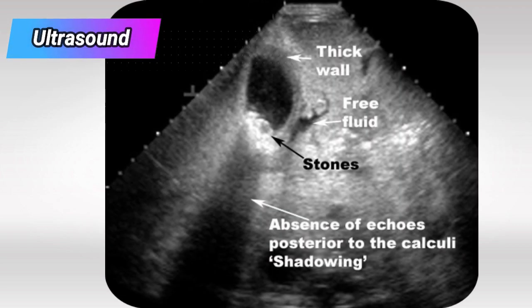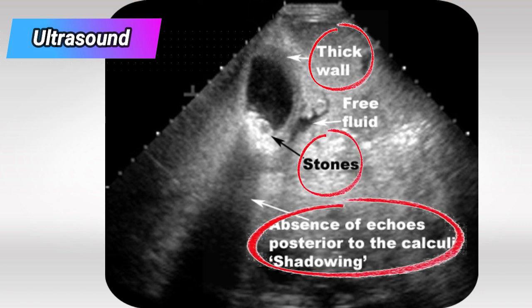Here are the signs that we'll see on ultrasound. First, we'll see a thick gallbladder wall, usually because of inflammation. Sometimes you can see the stone itself, and you can also see the acoustic shadow behind the stone.